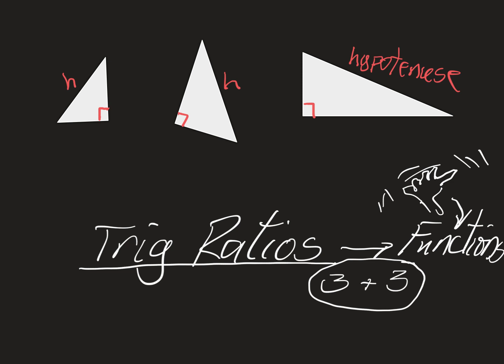The other two sides are called legs. Legs always make the right angle — they are actually two line segments that are part of the two rays that make the angle. Legs are always perpendicular to each other. That leaves us the two acute angles. We're going to call this angle A here, and we're going to call this one angle B.